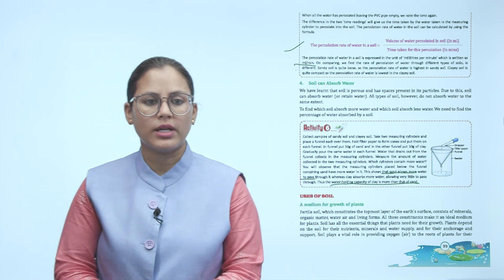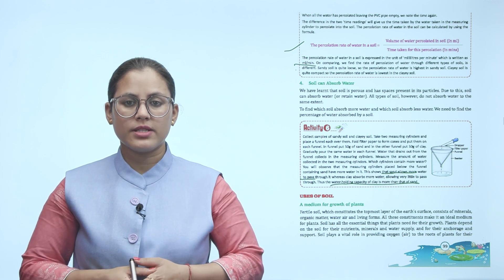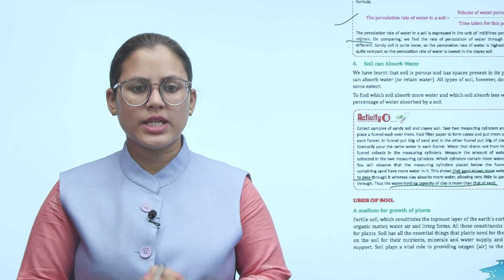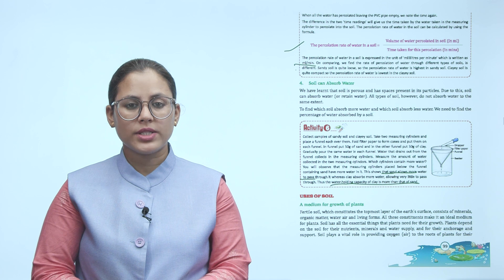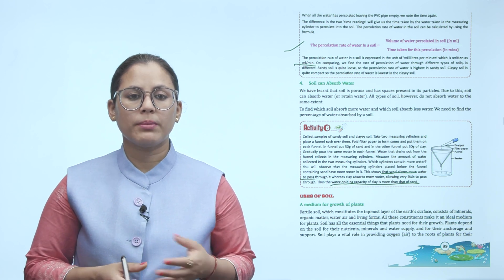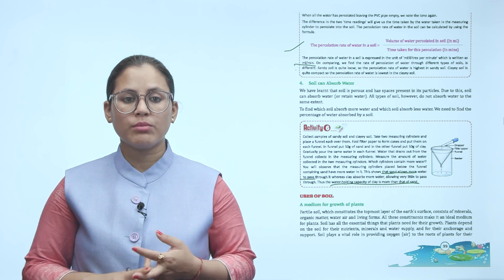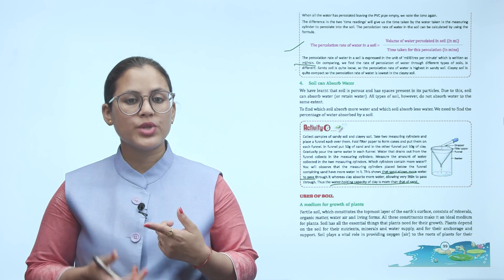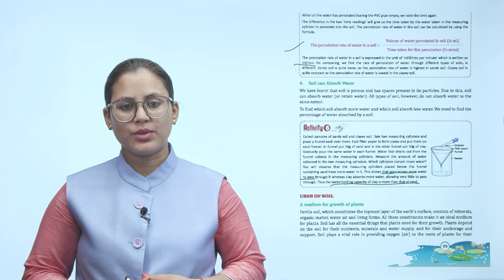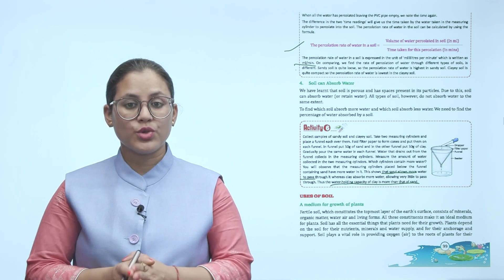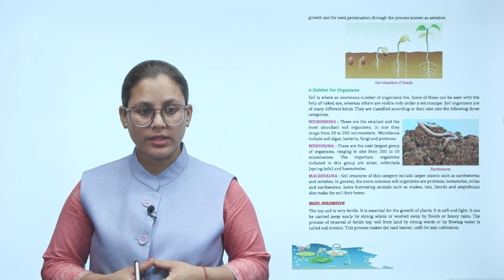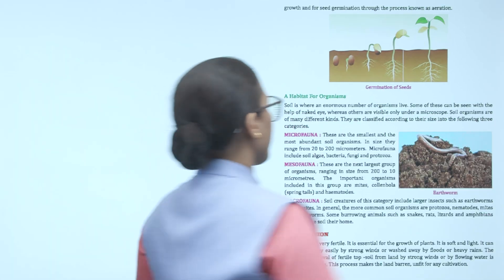Uses of soil — A medium for growth of plants: Fertile soil, which constitutes the topmost layer of the earth's surface, consists of minerals, organic matter, water, air and living forms. All these constituents make it an ideal medium for plants. Soil has all the essential things that plants need for their growth. Plants depend on the soil for nutrients, minerals, water supply and for anchorage and support. Soil also plays a vital role in providing oxygen to the roots of plants for their growth and for seed germination through the process known as aeration.